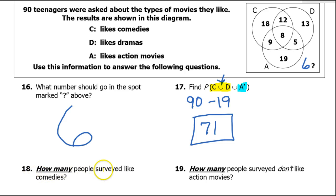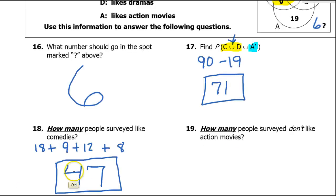For number 18, how many people surveyed like comedies? Well, people that like comedies are everyone inside of this circle. So I'm talking about those four numbers. Let's see, 12 plus 8, that's 20, so then just adding the 18 and the 9, so that's 47.